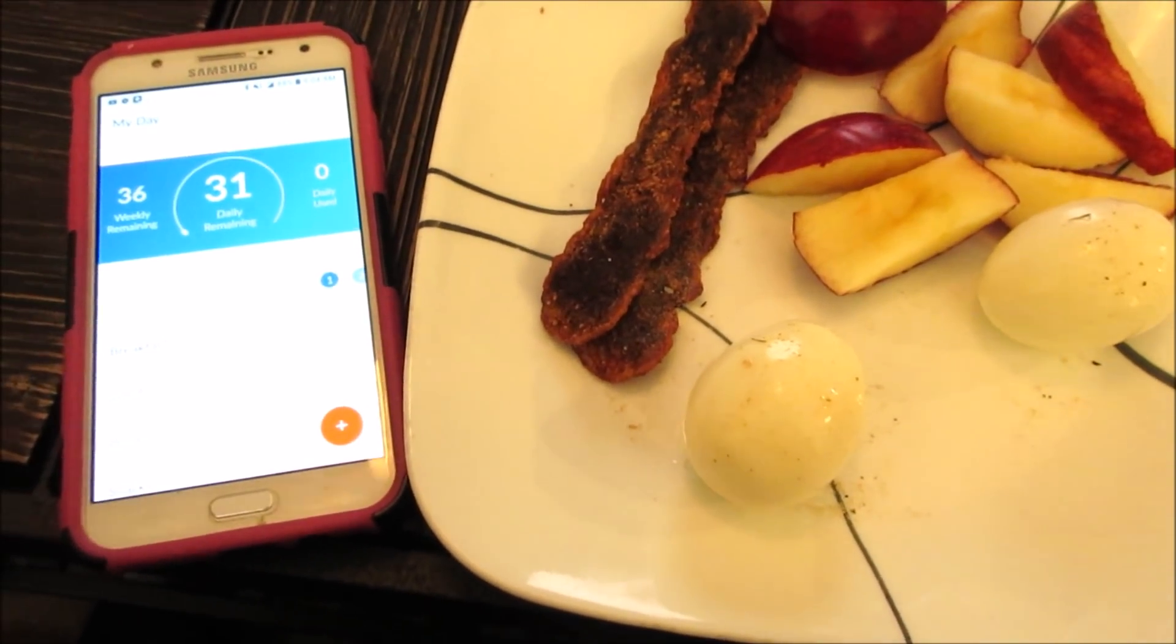I have some of this lunchmate deli style rotisserie season chicken breast. Five slices of this scans as zero smart points because it's 98% fat free, super low in calories, and it's really delicious. So I have five slices of that on my sandwich. I have a slice of this deli style monster cheese and that is three smart points. I also have a tablespoon of the Kraft fat free mayo on there and that is zero smart points.